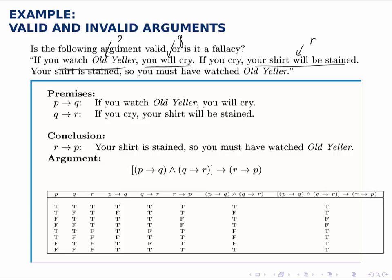So the false argument looks like P implies Q and Q implies R, therefore R implies P. And this is an invalid argument which you notice by telling that there are two false rows in that argument truth table.